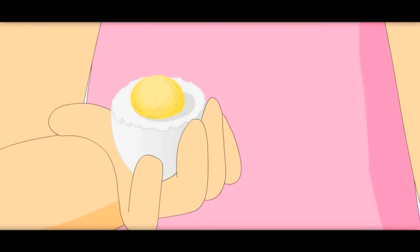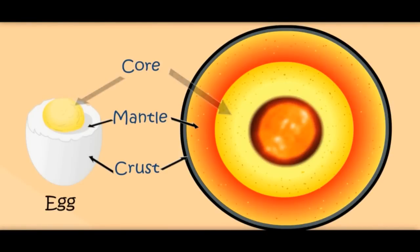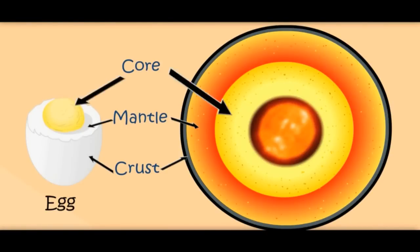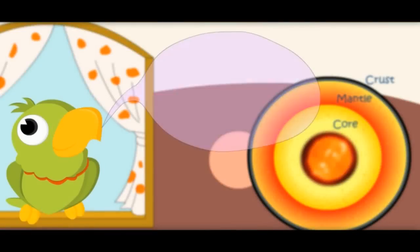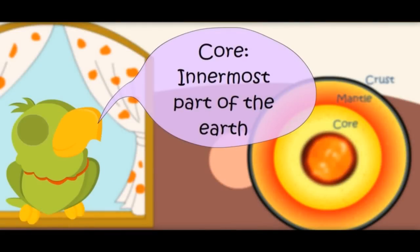This is another layer of the egg. Like the egg, Earth also has another layer. It is called the core — the innermost part of the Earth. Core! Innermost part of the Earth.